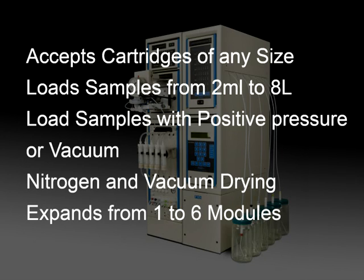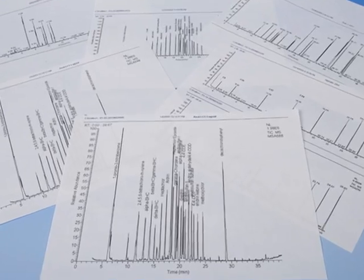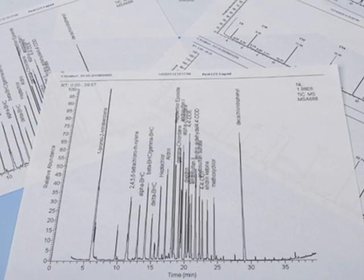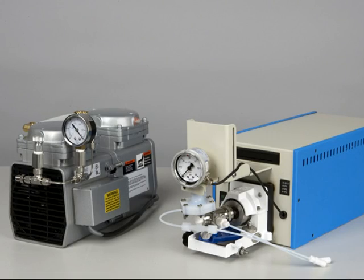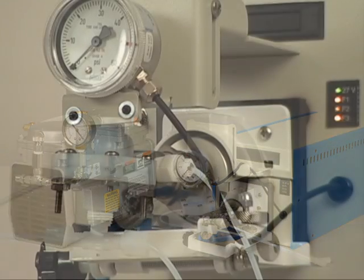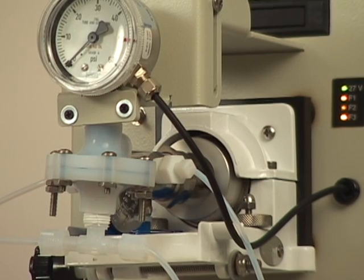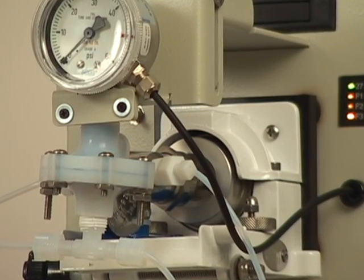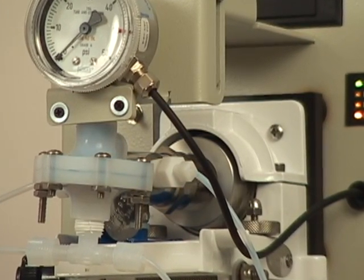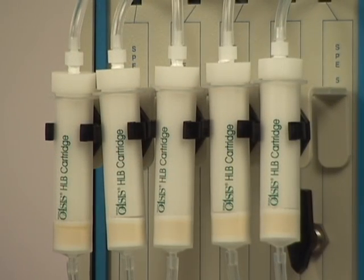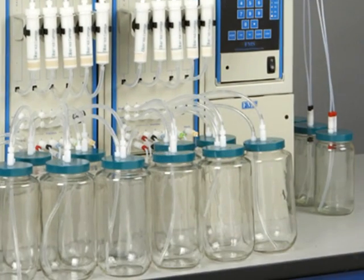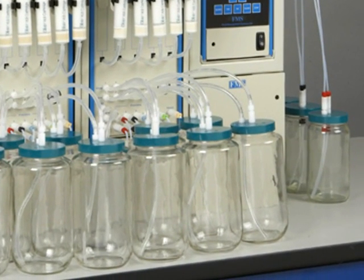The PowerPrep SPE system meets regulatory compliance guidelines for SPE methods throughout the world that require vacuum and positive pressure pumping for the accurate, precise delivery of sample, conditioning, washing, rinsing, and dilution solvents. A positive-pressure HPLC pump accurately and precisely delivers up to six solvents for conditioning, washing, rinsing, and dilution.